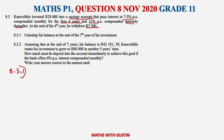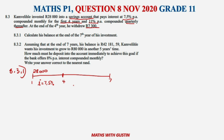Let me draw a small timeline. We need to calculate the balance at the end of the seventh year, so the investment runs for seven years total. The starting amount is R28,000. For the first four years, the interest rate is 7.5% compounded monthly, so m equals 12. For the remaining years, the rate is 11% compounded quarterly, so m equals 4. At the end of the fourth year, R7,300 is withdrawn.